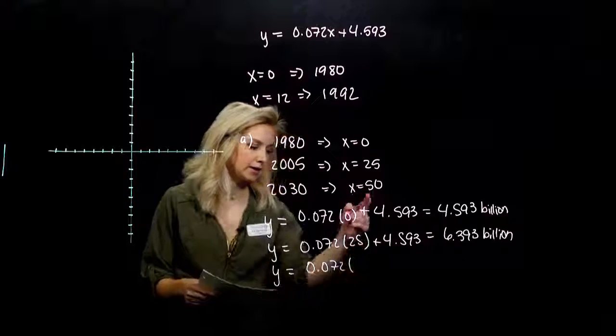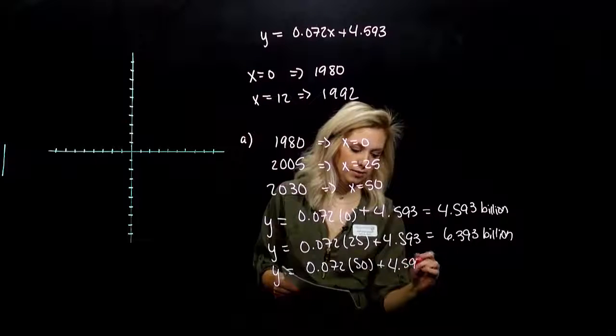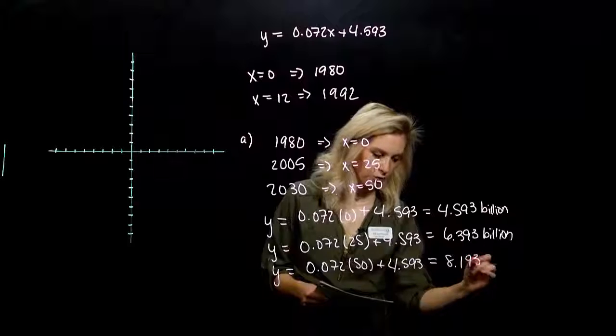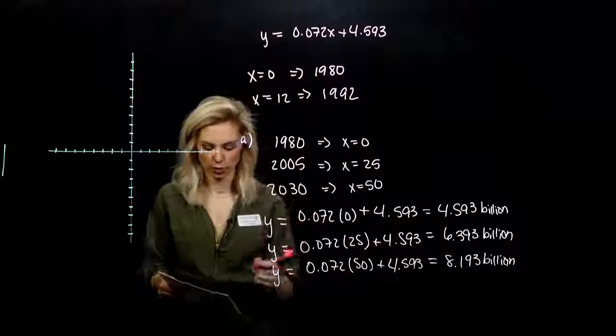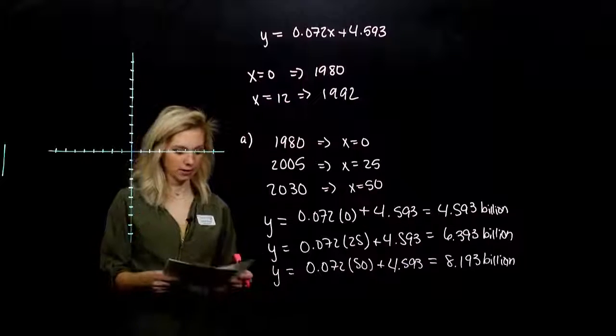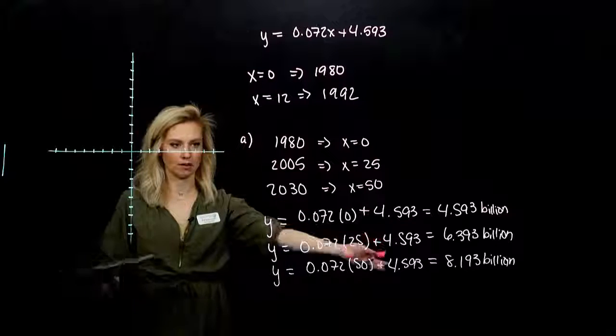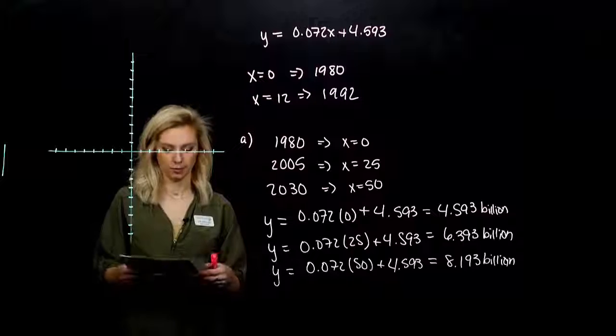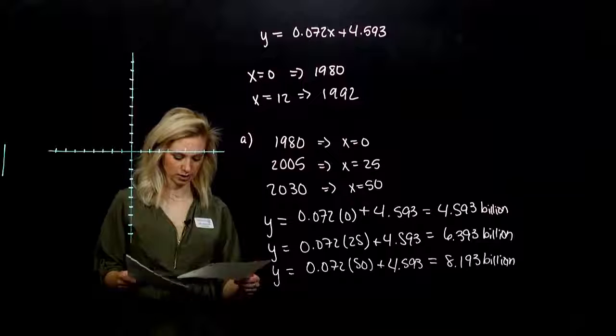Out into 2030, what is our world population going to look like? In this case, the x value is 50, adding the y-intercept, or the initial population in 1980, 8.193 billion in 2030. So we estimated world populations in years that have already happened, and projecting out farther into the future, we have a good estimation or projection of what the world population is going to be.